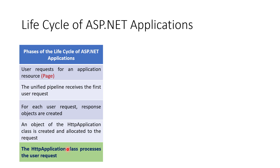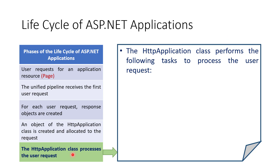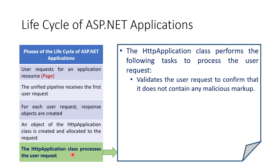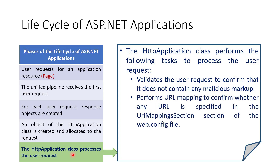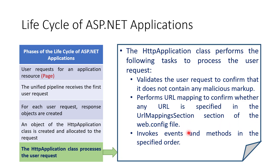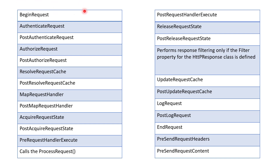The fifth and last phase is where the HttpApplication class processes the user request. In this phase, the HttpApplication class validates the user request to confirm it does not contain malicious markup. It performs URL mapping as specified in the URL mapping section of the Web.config file. It then invokes events and methods in a specified order, starting from BeginRequest and proceeding through the pipeline.